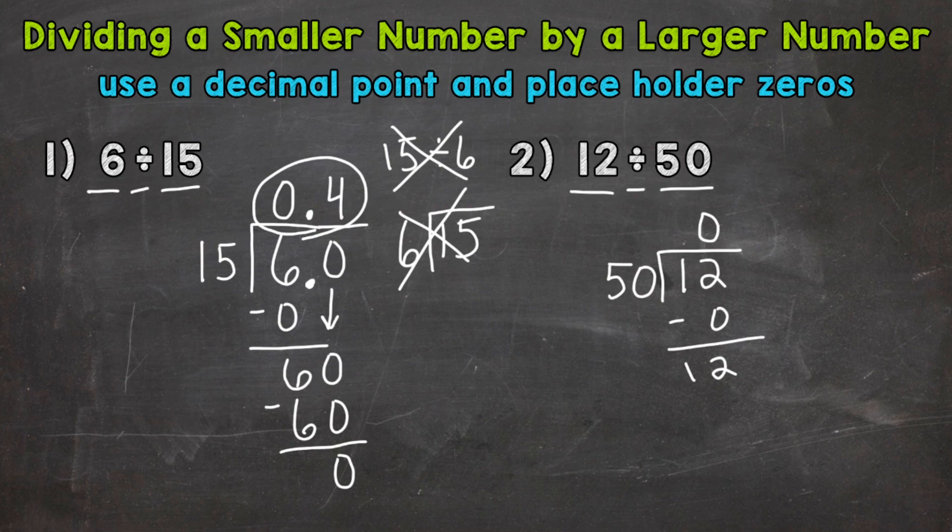So now we're stuck. So what we can do, we can use a decimal point and placeholder zeros. So let's put our decimal point after 12. That does not change the value of our problem or that 12. Bring that decimal point straight up and that will place it correctly in our answer. So we need something to bring down. So we can use a placeholder zero in the tenths place. Doesn't change the value of anything and bring that zero down.